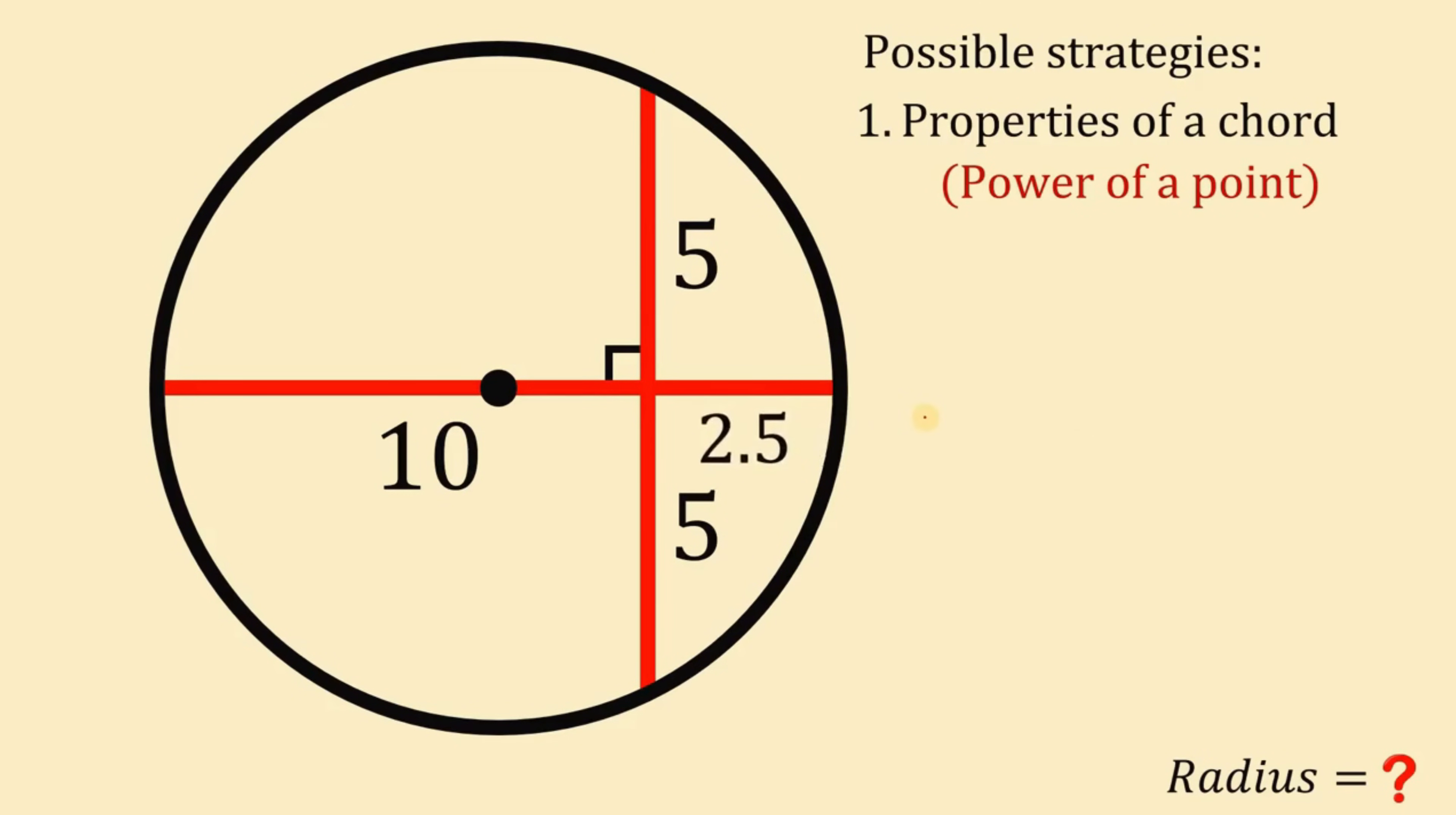And also take note that the radius of this circle is half the diameter. And we know the length of the diameter, this is just 10 plus 2.5 or simply 12.5. So the length of the radius is simply equal to 12.5 divided by 2 or simply equal to 6.25. And that is the length of the radius.